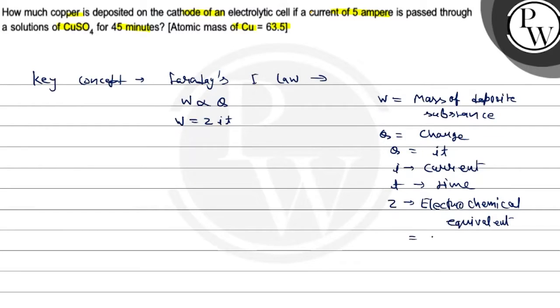This value is E, equivalent mass. Equivalent mass of the deposit substance upon 96,500 coulomb. So this value here we can write W is equal to Z.